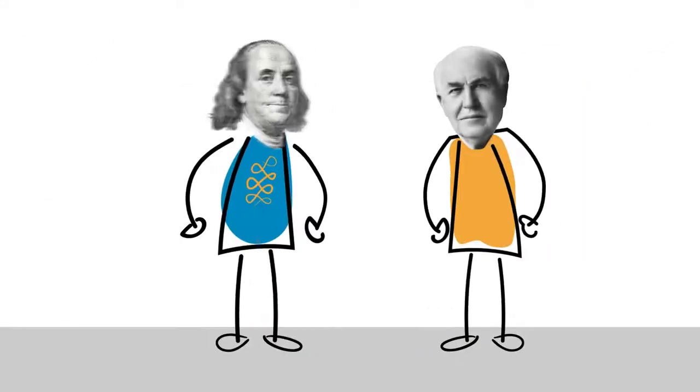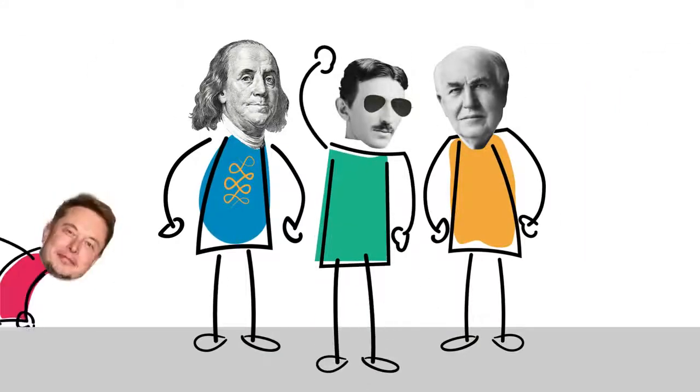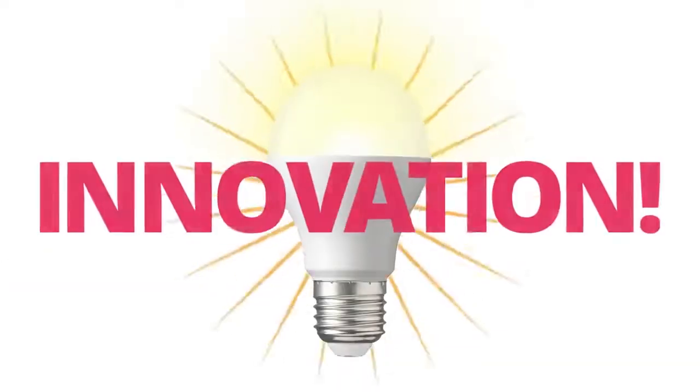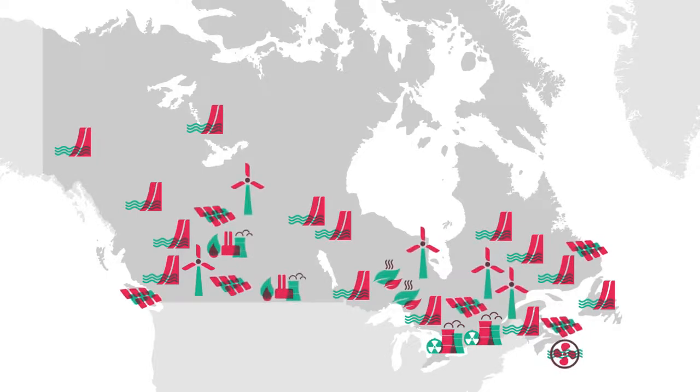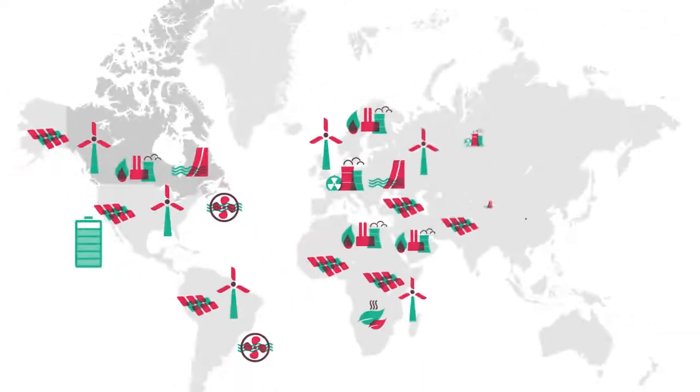The same way Thomas, Benjamin, and Nikola solved the problems of their day: innovation. Innovation is changing the way we produce and distribute electricity across Canada and in other parts of the world.